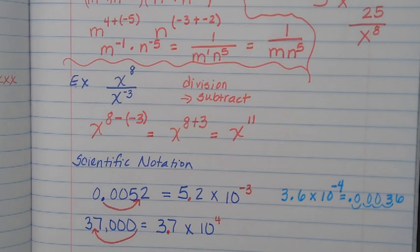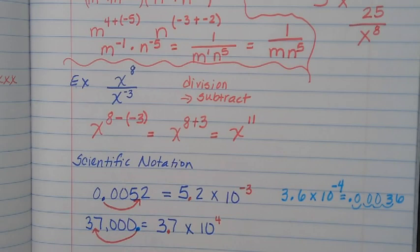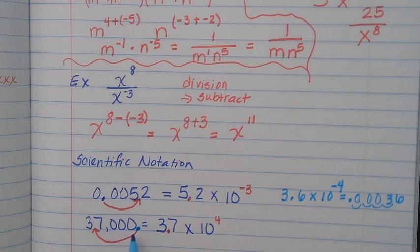When you're starting with a very large number and want to put it in scientific notation, take the decimal from the back and put it right after the first digit. So it would be 3.7, and then count how many spaces we moved it: 1, 2, 3, 4 — that's why we have 10 to the fourth.